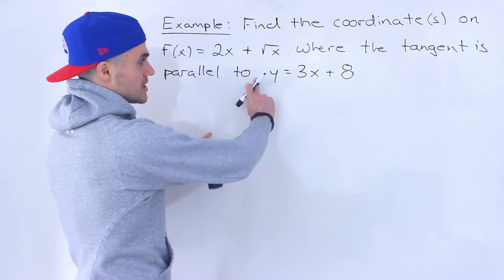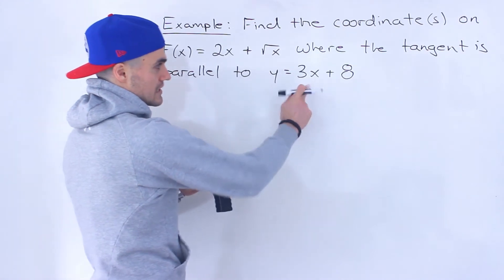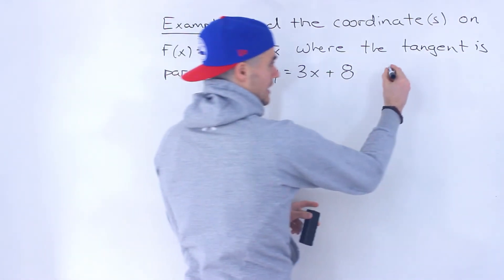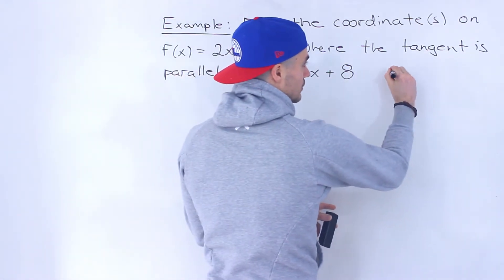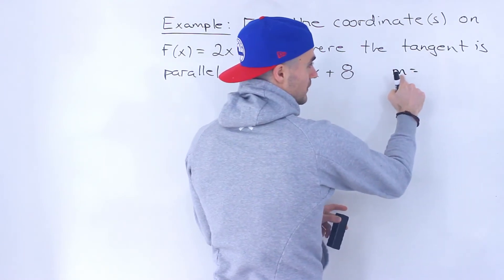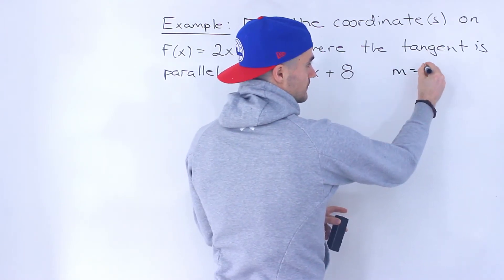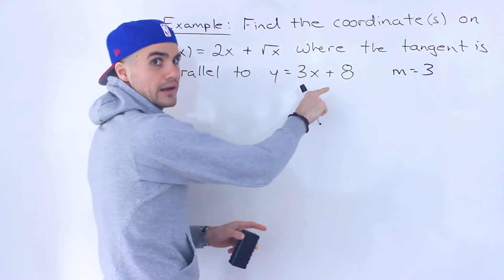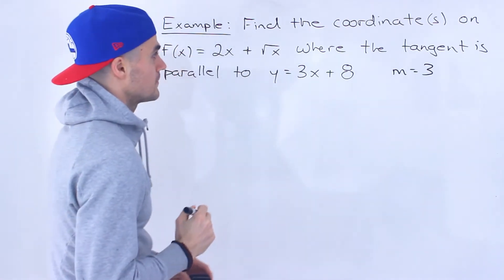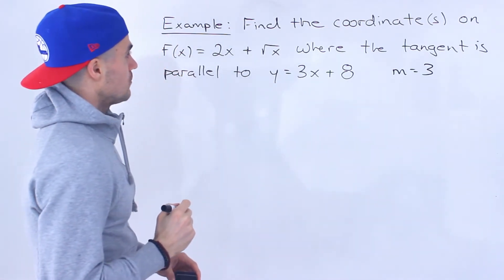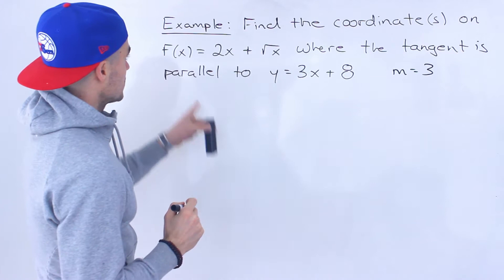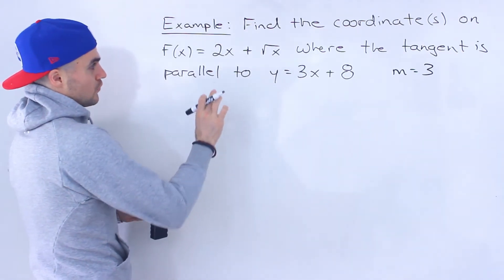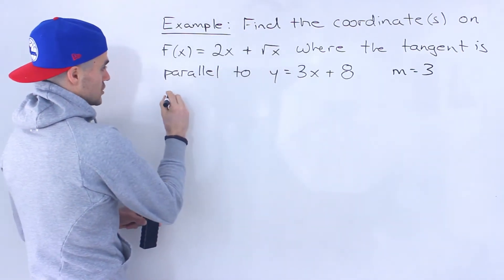If the tangent is going to be parallel to this line, that means it's going to have the same slope as this line. So we're basically looking for where the slope of the tangent is going to equal 3, because this line here has a slope of 3. So what we have to do is come up with a general expression for the slope of the tangent for this function.